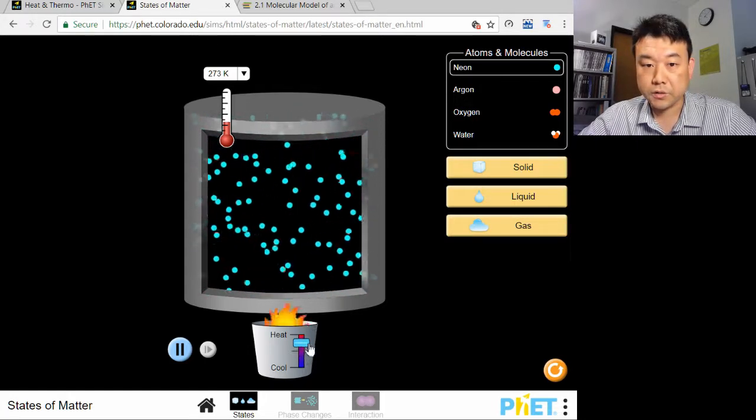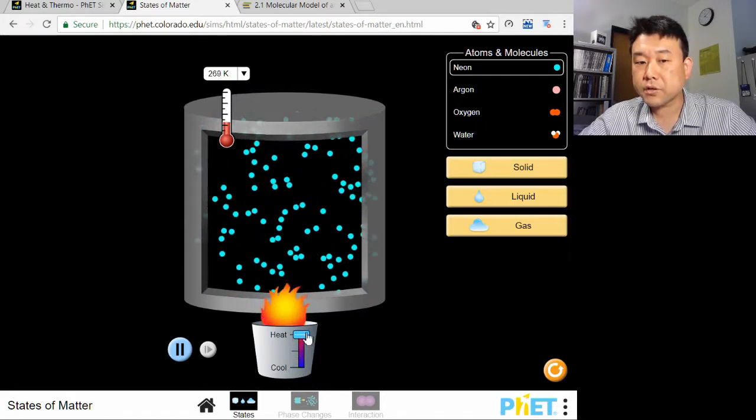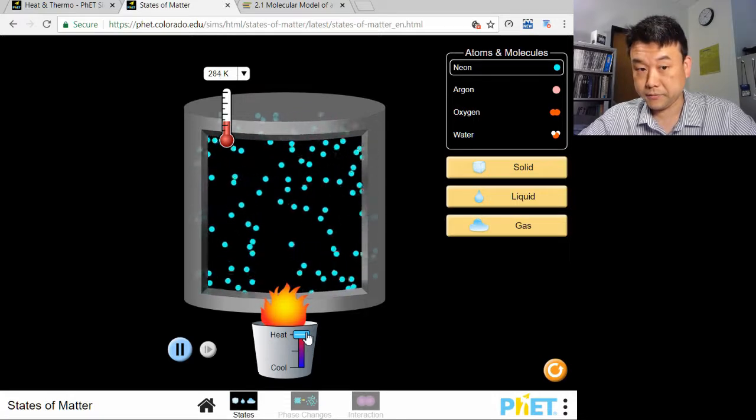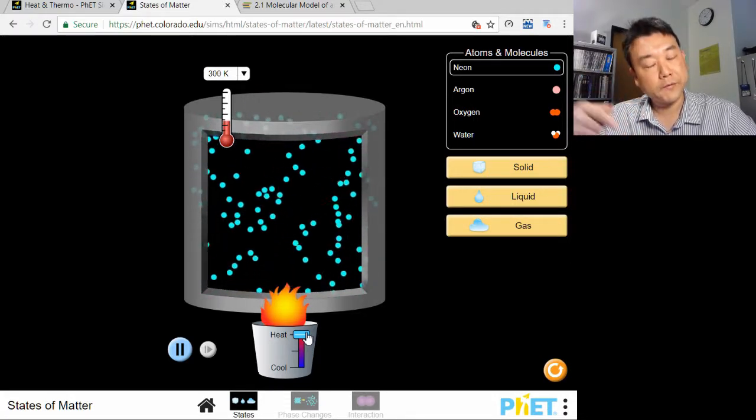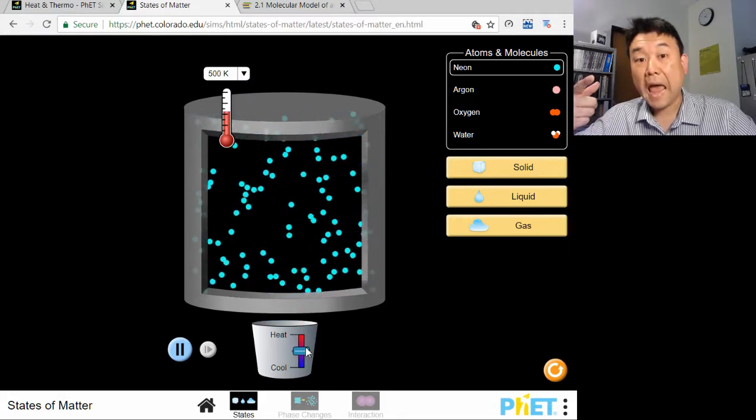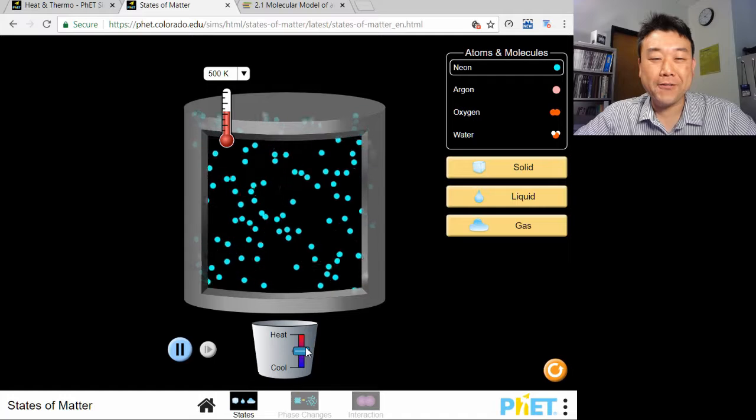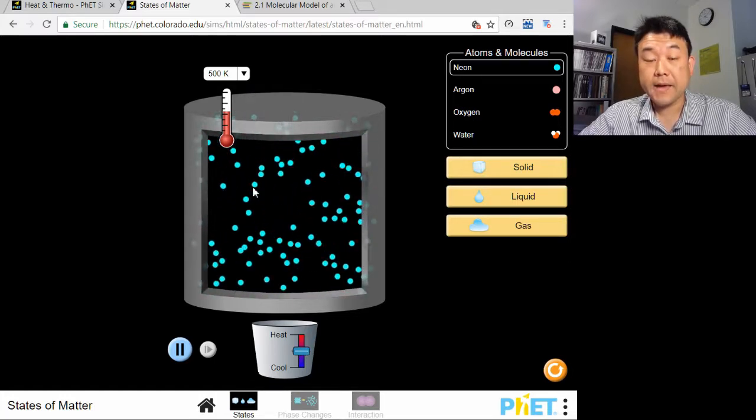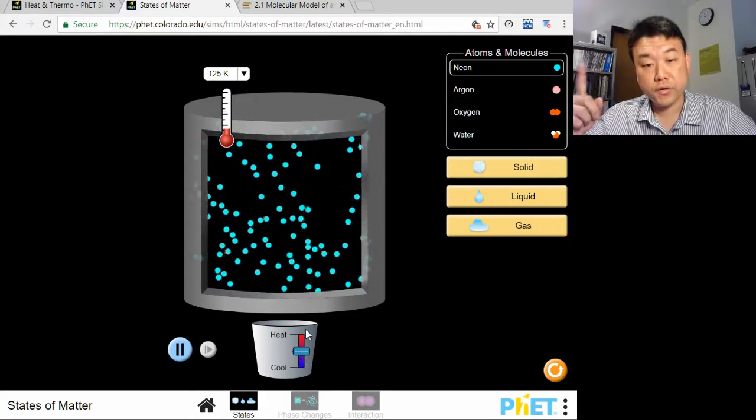raising the temperature and lowering the temperature, is how temperature is related to the speed of the molecules. Here is the neon gas at 500 K. See how fast the atoms bounce around. And here is the neon gas at 125 K.